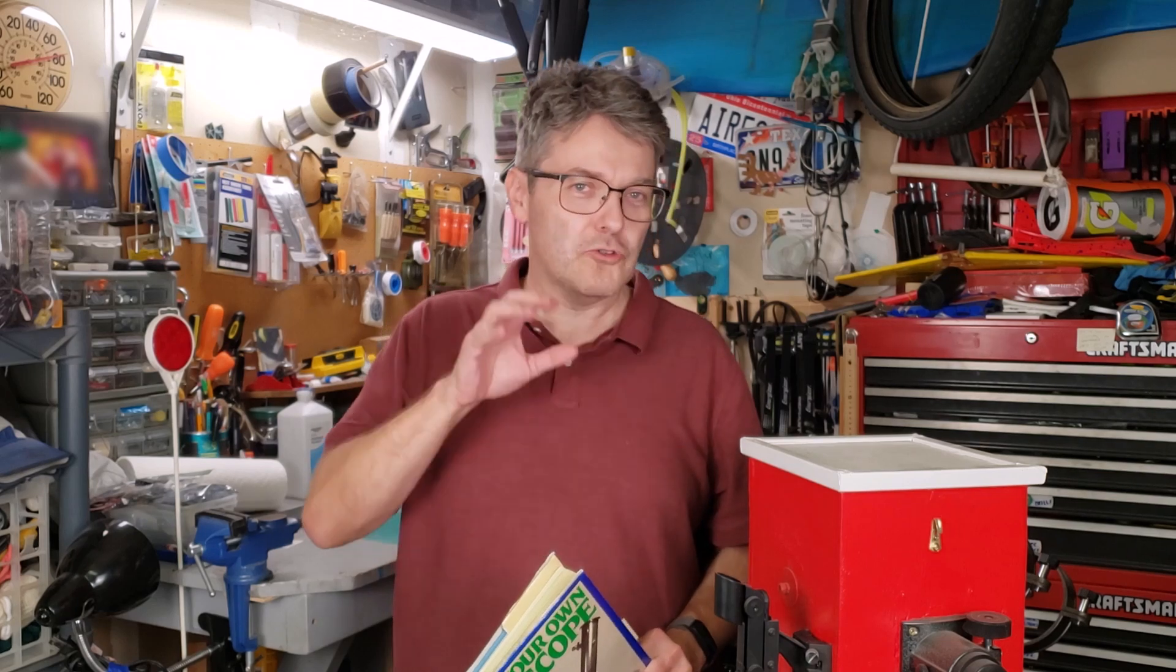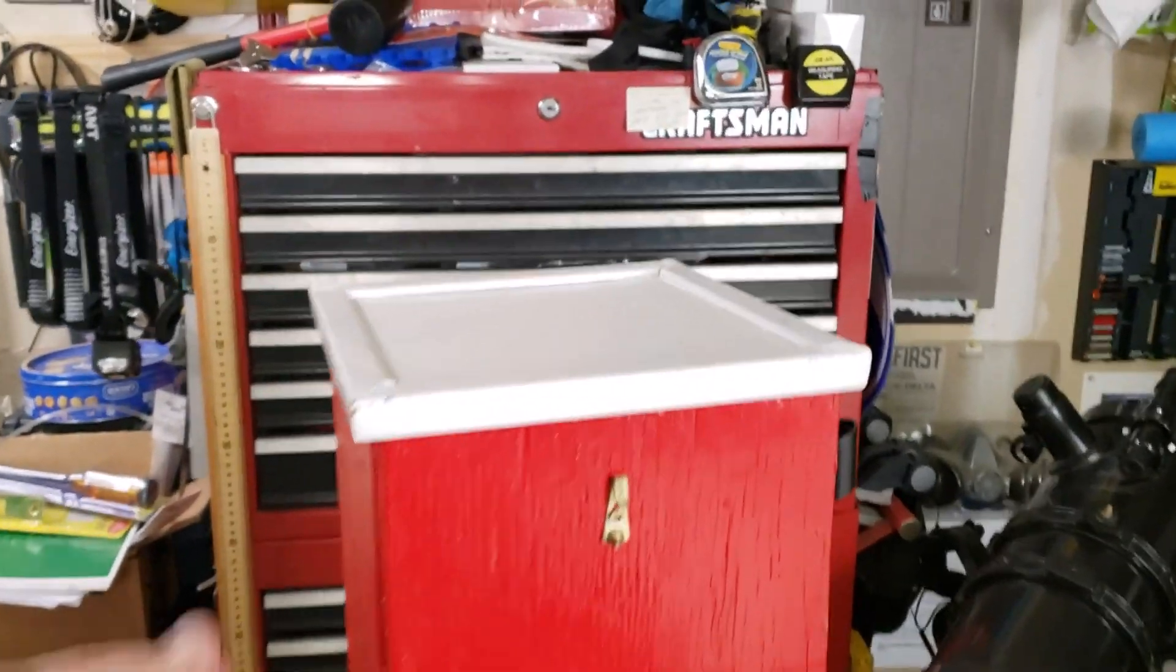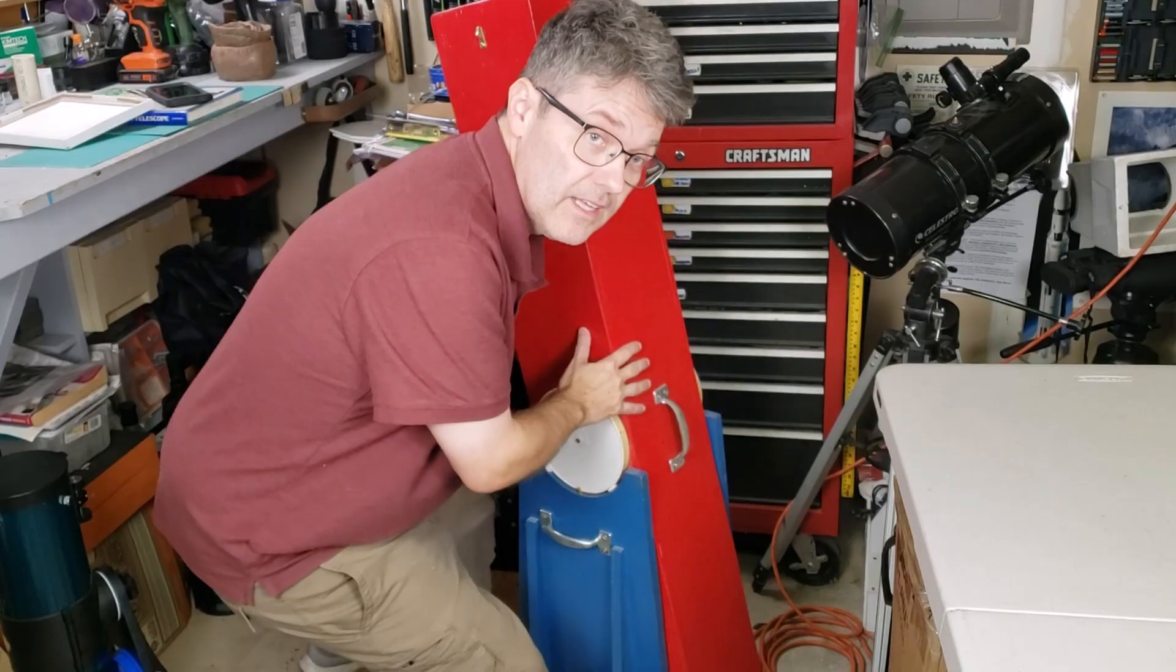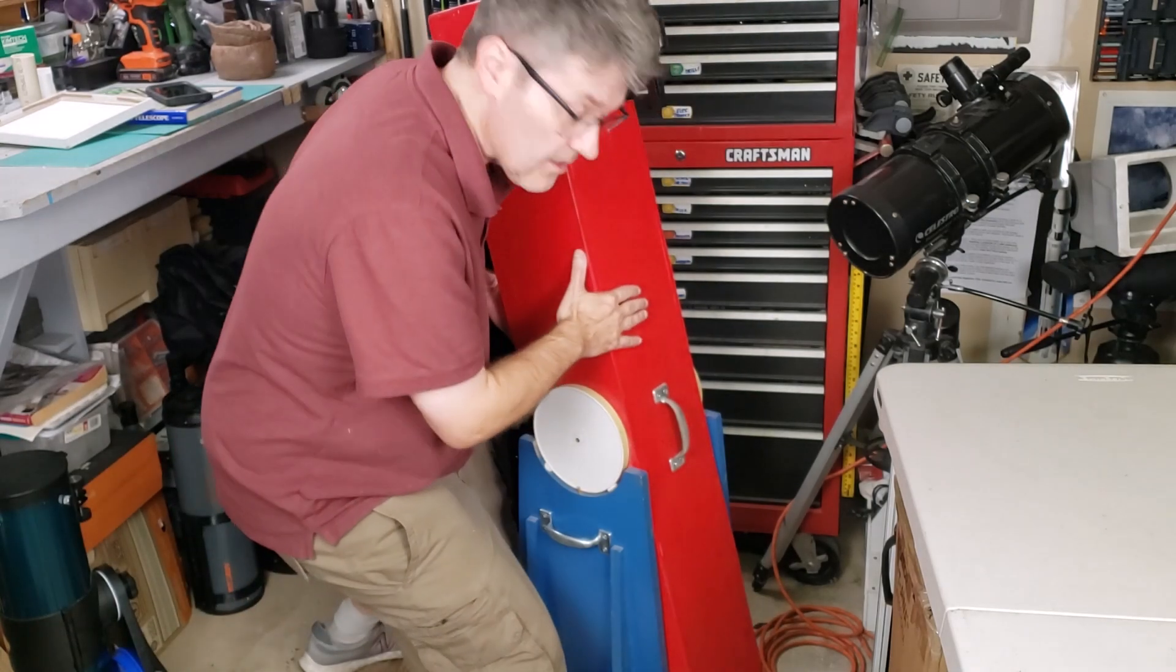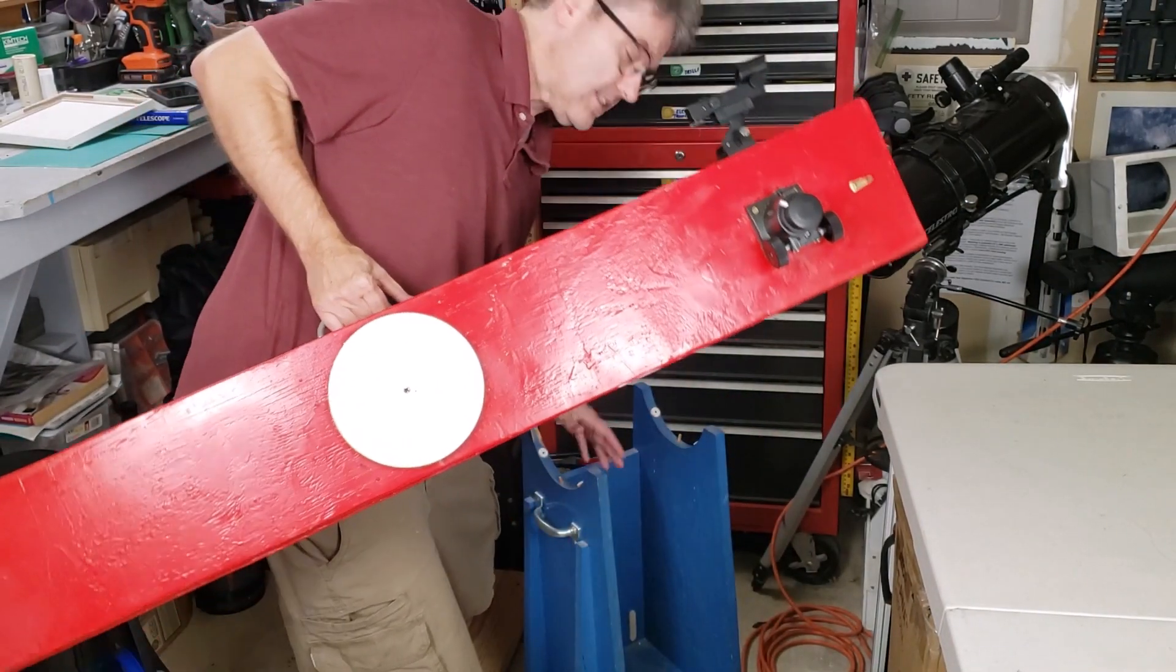Some of the parts harken back to older technology. Some of you may not be familiar with it if you're really young, but I think you might find it pretty interesting. So, let's get started. The first thing we need to do is remove the dust cap. Like any good Dobsonian, the top comes off. Let's take a look at the base first.